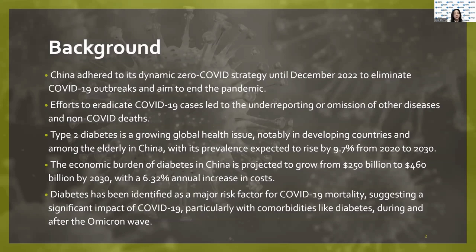China adopted a dynamic zero-COVID strategy until December 2022. While successful in managing the pandemic outbreak, this approach led to the under-reporting of other diseases including type 2 diabetes. Diabetes is a growing concern globally and is expected to see a significant rise in prevalence in China from 2020 to 2030.